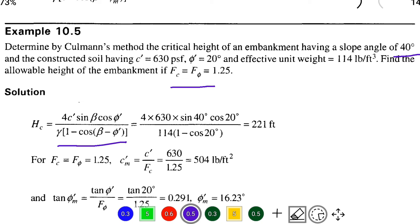The given values are: beta is 40 degrees, C equals 630 PSF, φ equals 20 degrees, F_c and F_φ values are 1.25, and gamma is 114. Now we can substitute 4 times 630, which is the C' value, times sine 40 degrees times cosine 20 degrees.